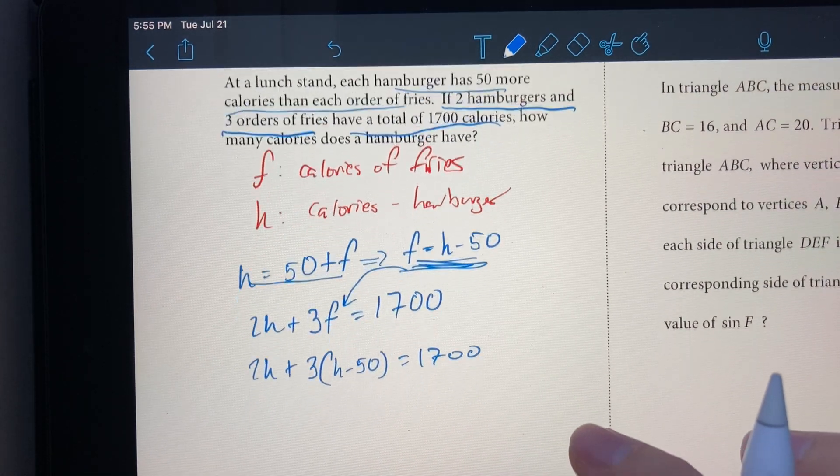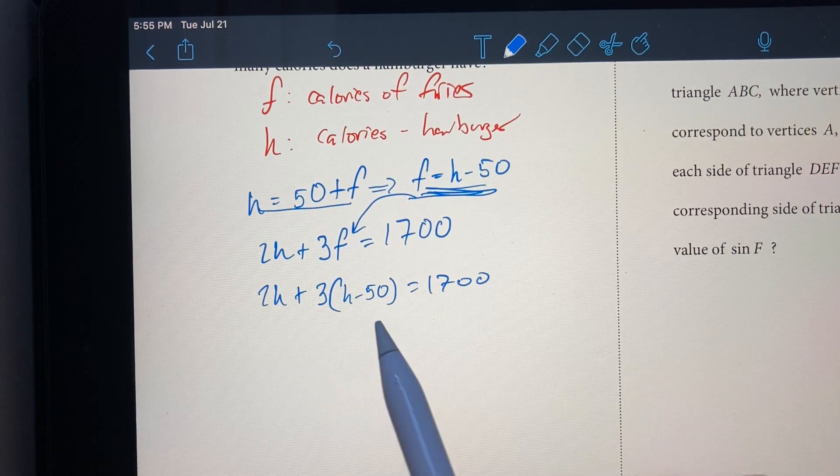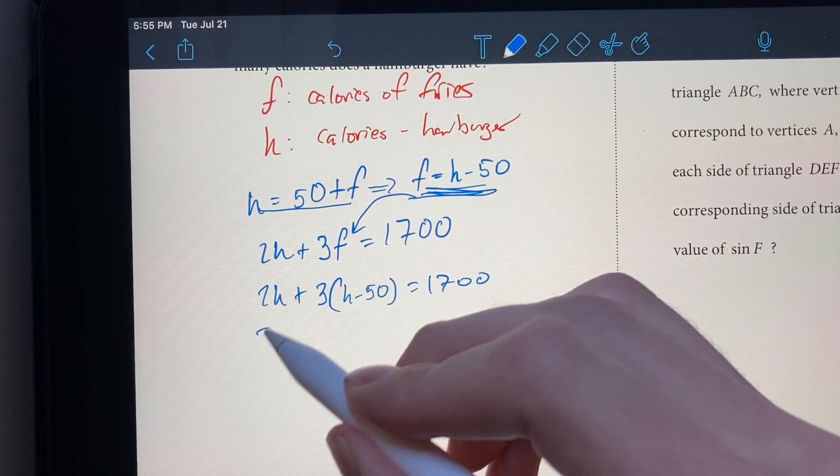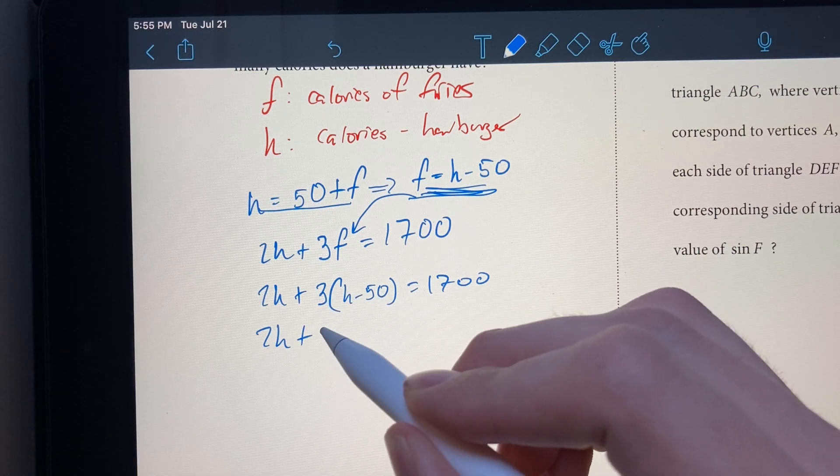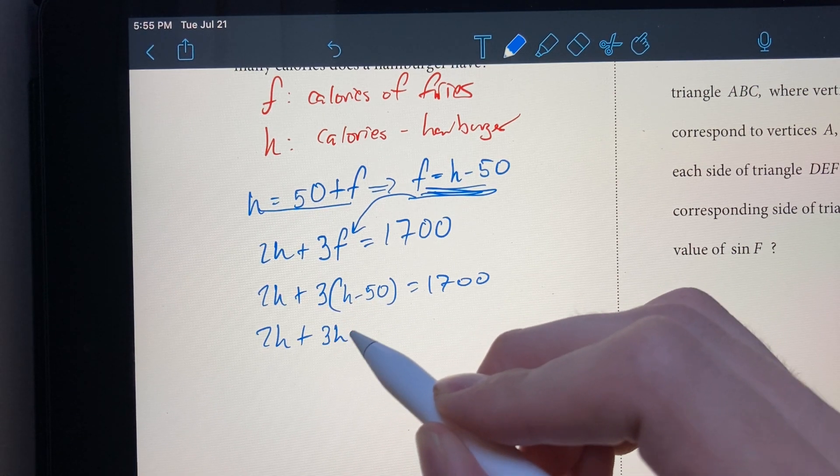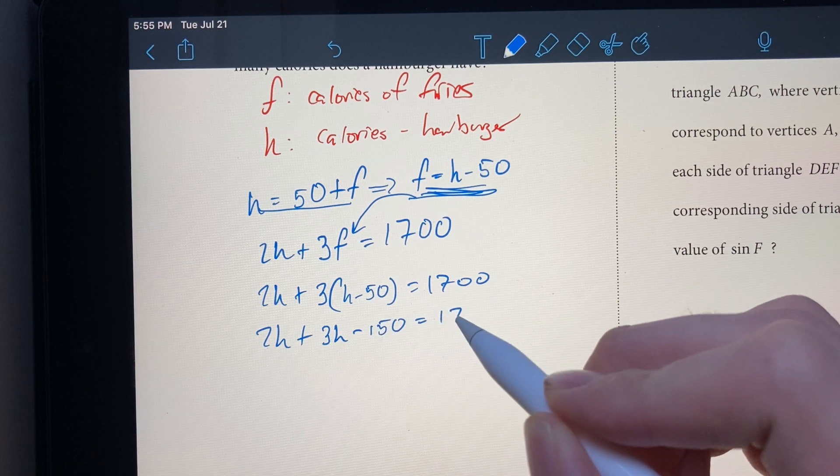Now all we have to do is simplify this equation and solve for H. I'm going to use distribution to distribute the three into the parentheses. So we get 2H plus 3H minus 150 is equal to 1,700.